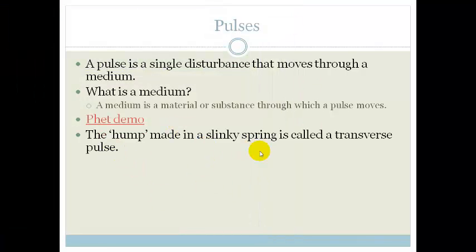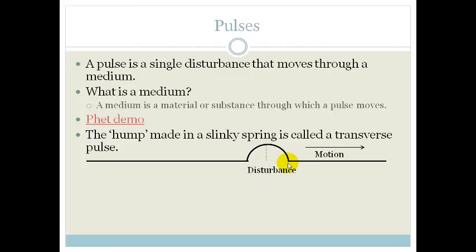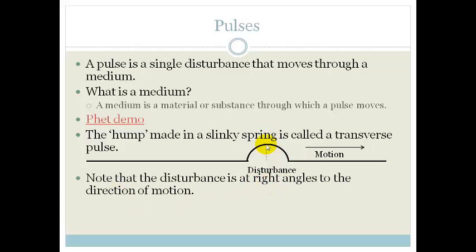So the hump made in the slinky spring is called the transverse pulse. That hump there is called a transverse pulse. And note that the disturbance is at right angles to the direction of the motion. The motion of the wave is this way, but the pulse is going up and down. And that causes a transverse wave.